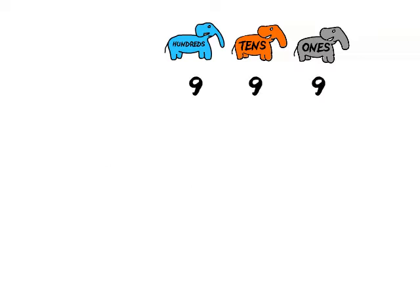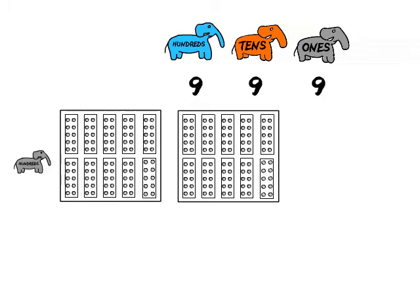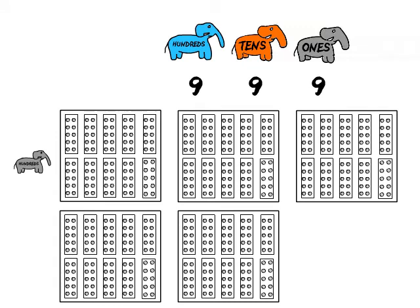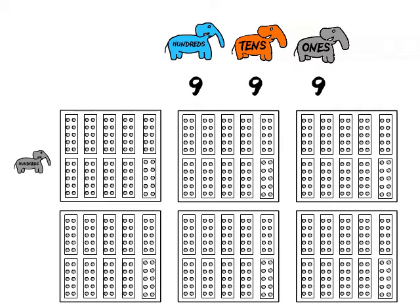Well, one thing we don't do is try to draw nine hundreds, nine tens, and nine. If we started with the hundreds, we'd run out of room in a hurry. Besides, this is too many objects to think about.